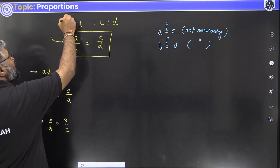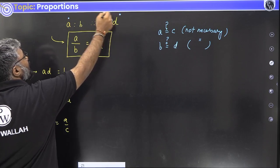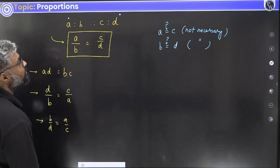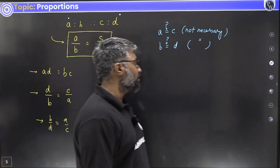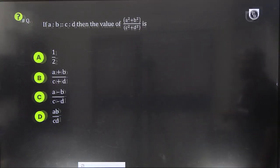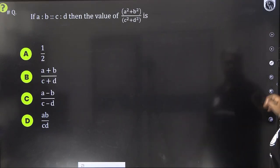These are called the extremes. A and D are called the extremes. B and C are called the means. Let us try solving a question now.